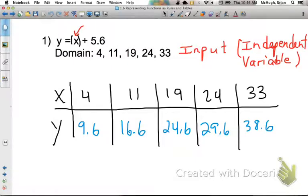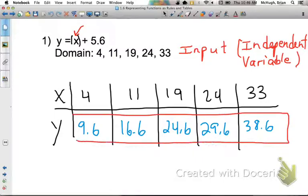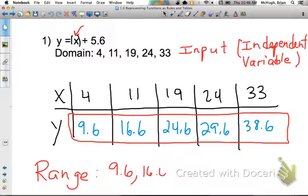And now these values here, the values that we just got out of our function rule by putting in the domain values, those make our range. And so when we're talking about this specific rule with the domain that was given, our range is 9.6, 16.6, 24.6, 29.6, and 38.6.